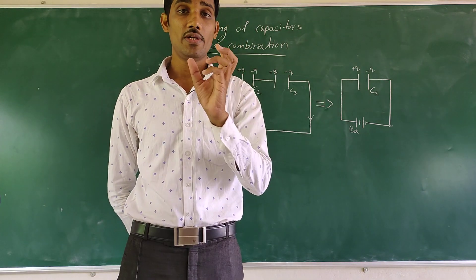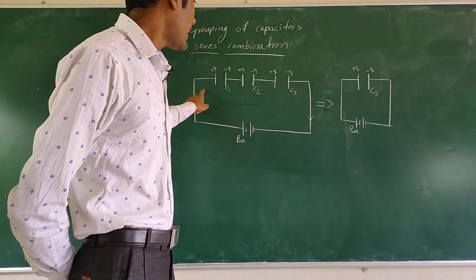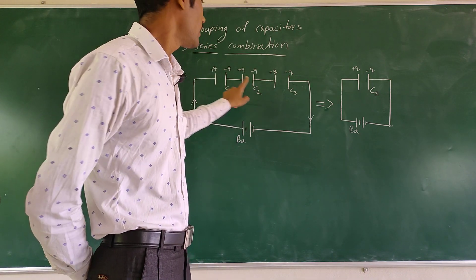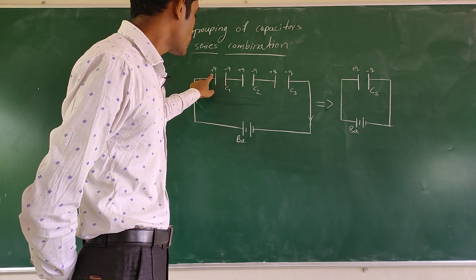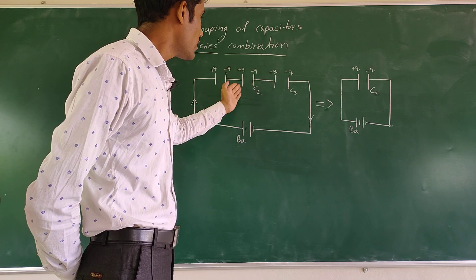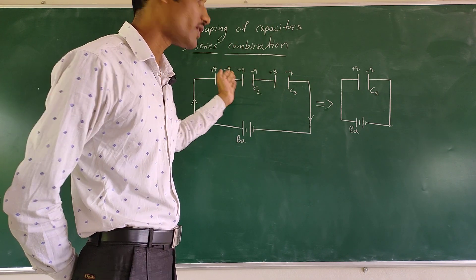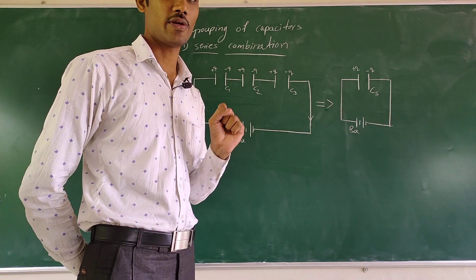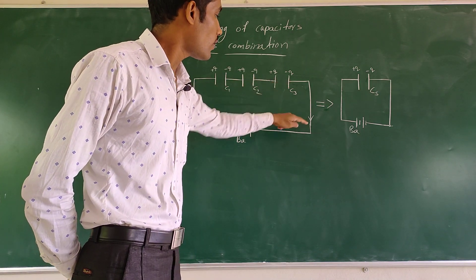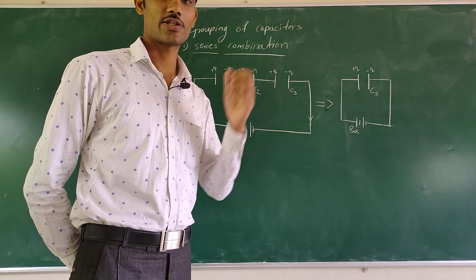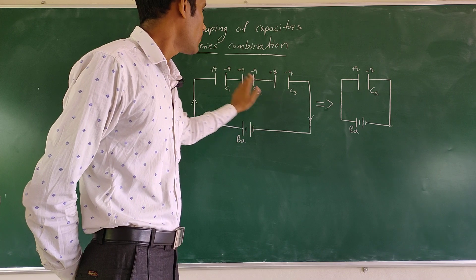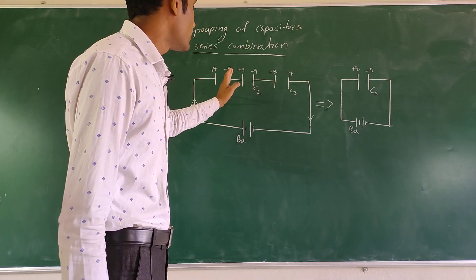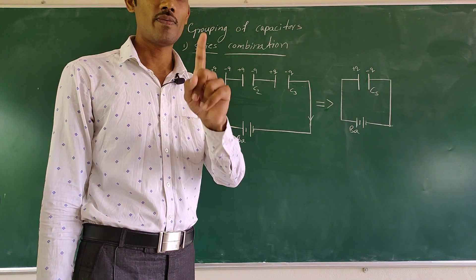Capacitors are connected in series if the charge on each plate of the capacitor is the same — whether negative or positive, the magnitude of charge is the same. Also, there is only one path for the flow of electric charges in a series combination.